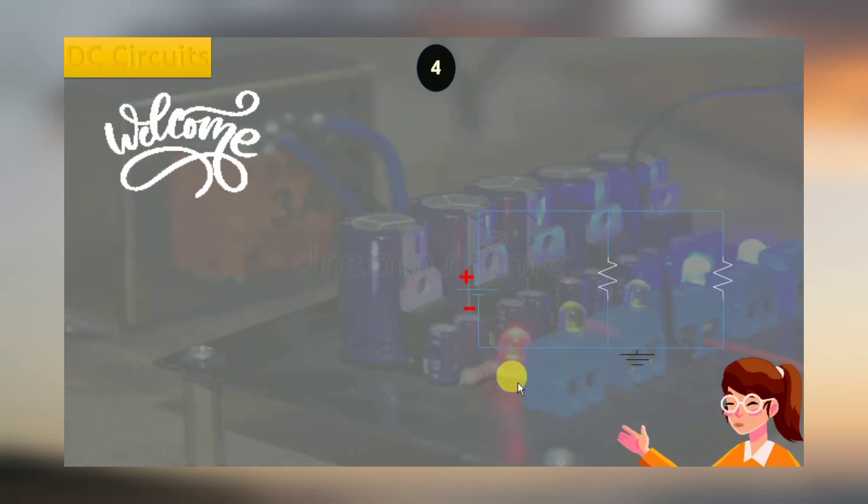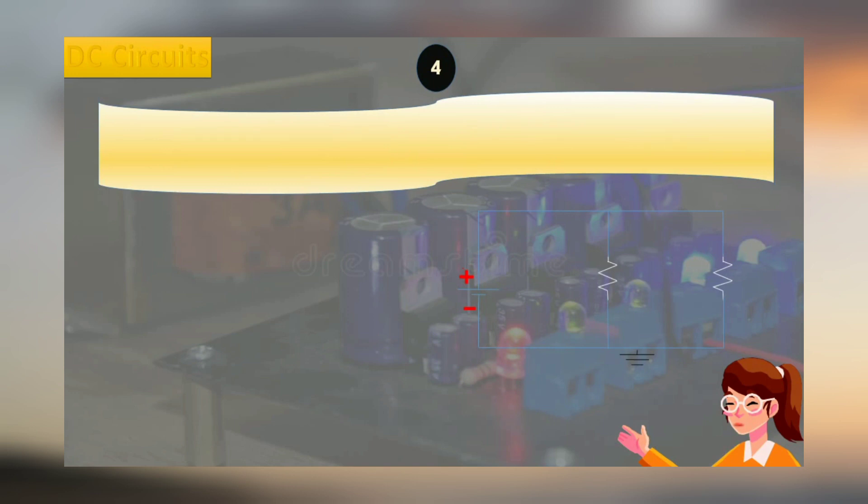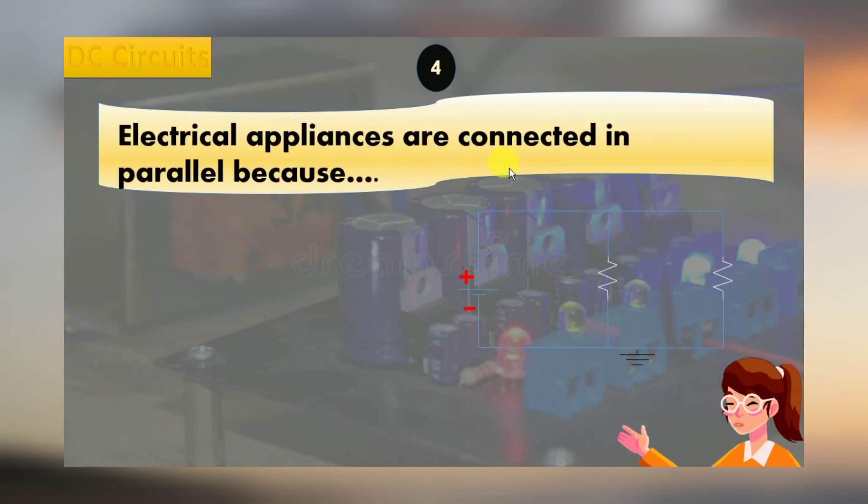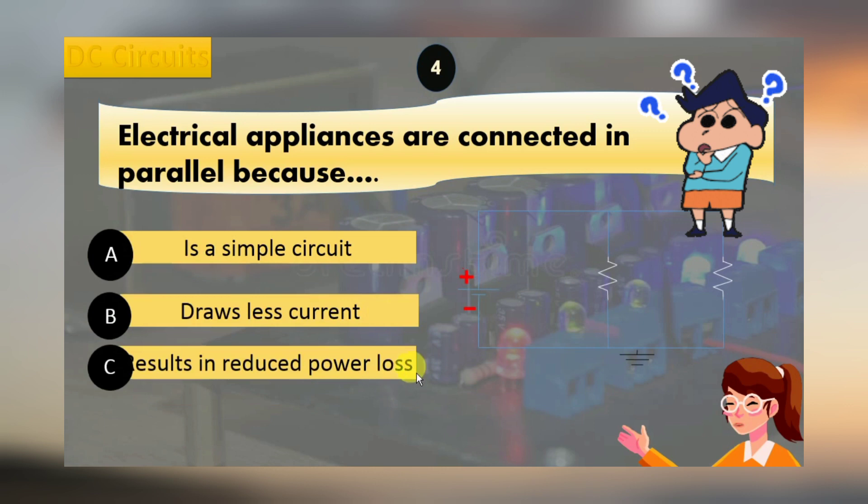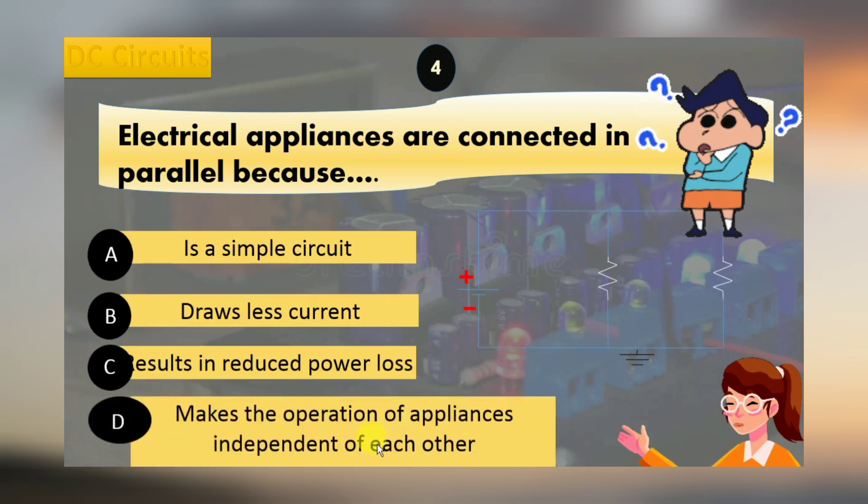DC circuit question number 4: Electrical appliances are connected in parallel because: A) it is a simple circuit, B) it draws less current, C) it results in reduced power loss, and D) it makes the operation of appliances independent of each other.